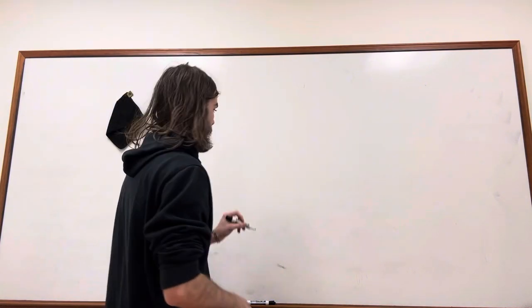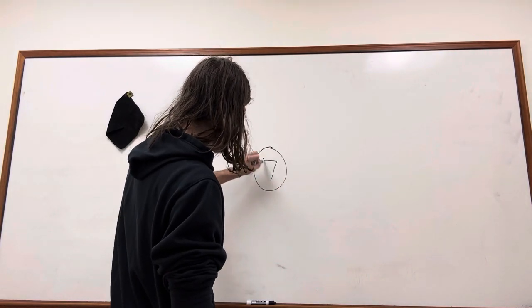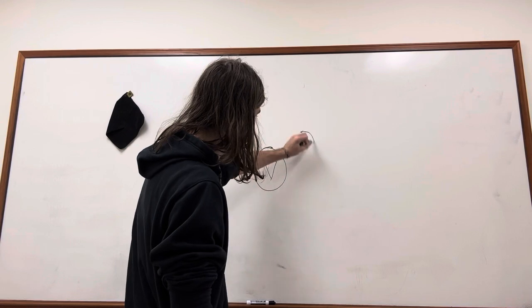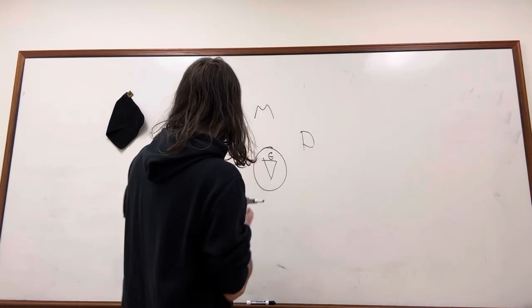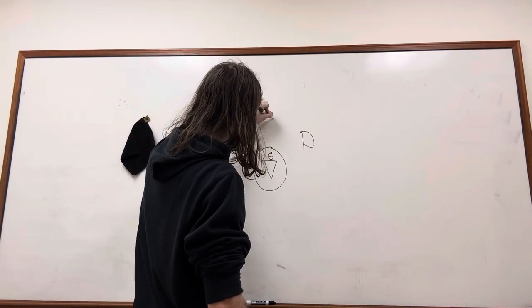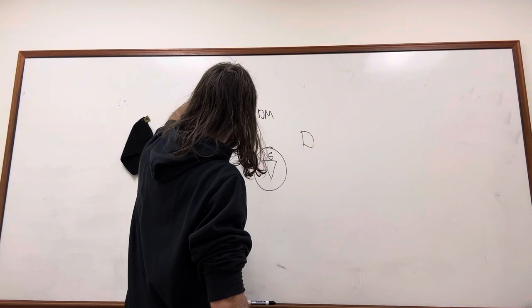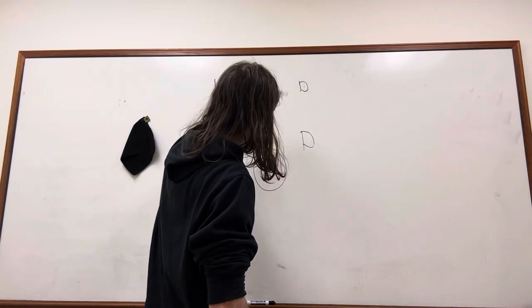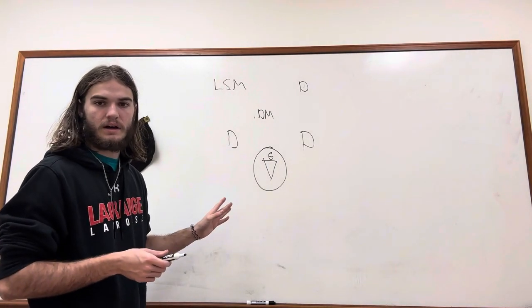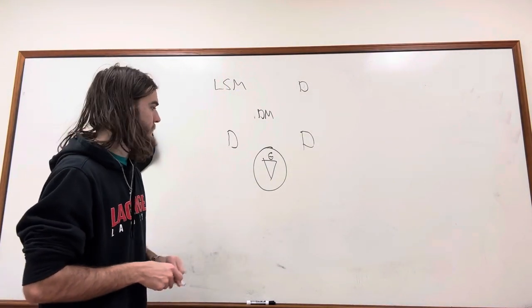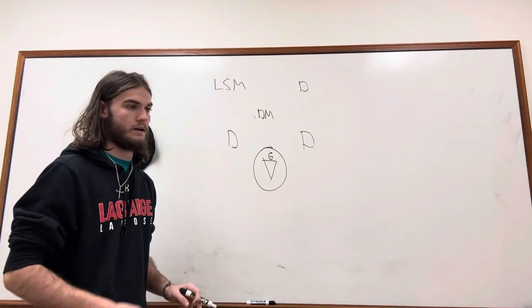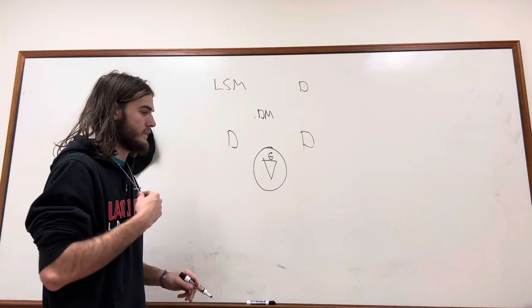So what that looks like is you got your goal, you got your goalie, you got a low pole, a low pole, a D-midi, we're going to make that look a little bit better, D-midi, your LSM, and your third D-pole. So that is the basic setup of what it looks like. Two low poles, D-midi, LSM, defense.